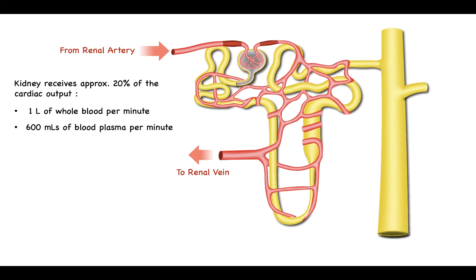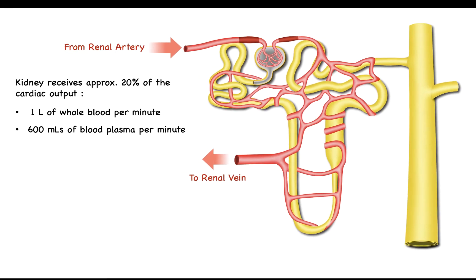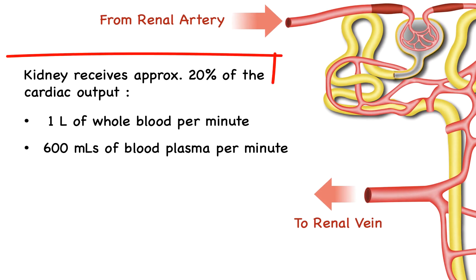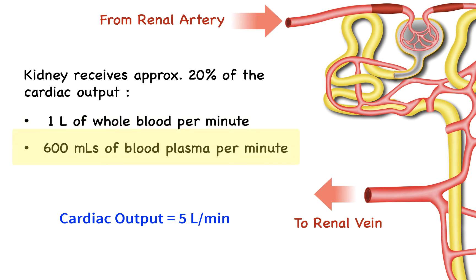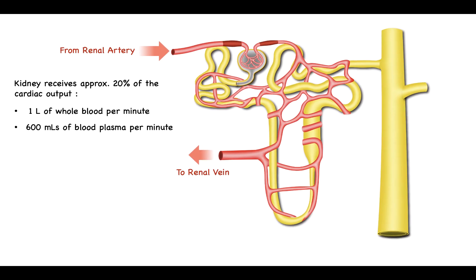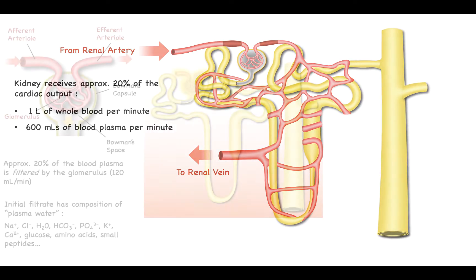In order for the kidneys to function, they must receive an enormous perfusion supply — approximately 20% of the cardiac output. The average cardiac output for an adult human is somewhere in the neighborhood of five liters per minute, so the amount of blood directed to the kidneys is approximately one liter of whole blood per minute. That equates to about 600 milliliters of blood plasma per minute, blood plasma being the watery extracellular blood fluid which is filterable within the glomerulus.